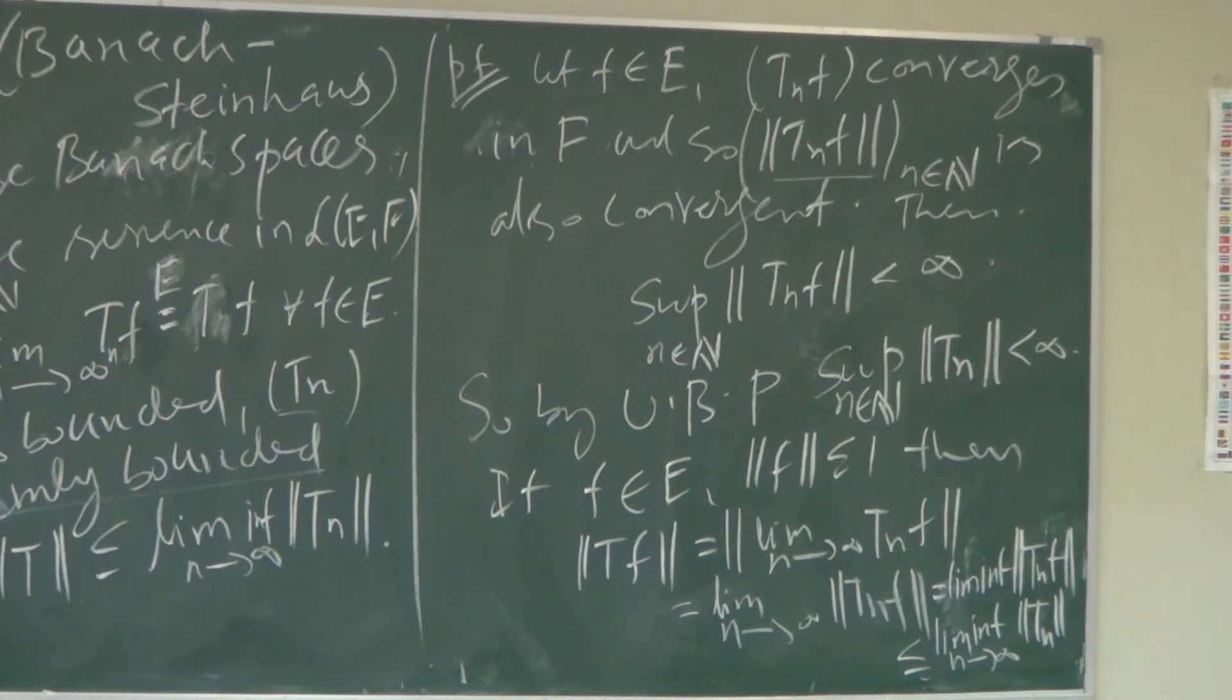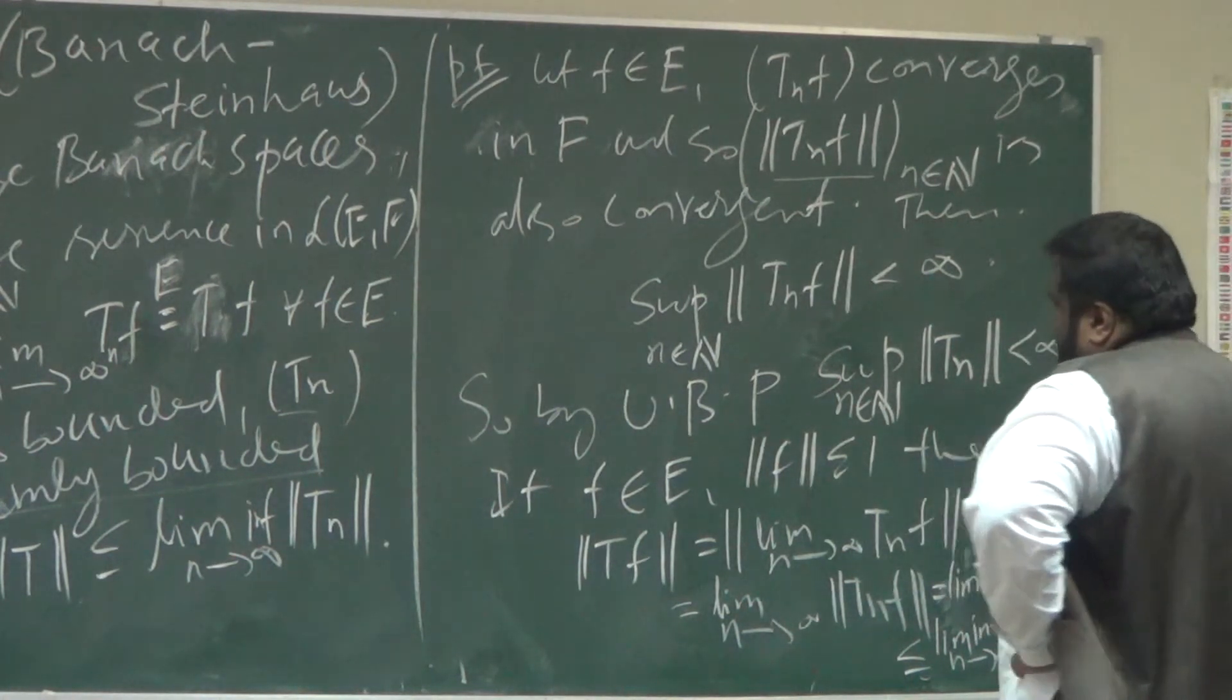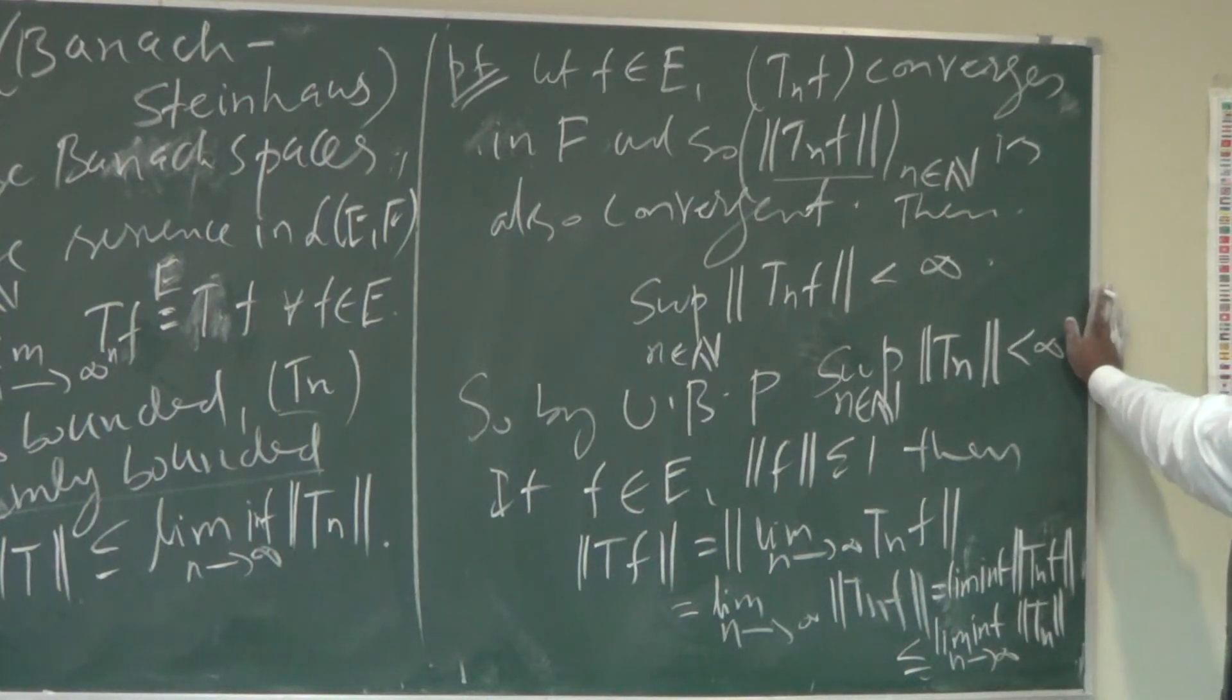So what we showed, that's what I have told you, that when Tn f converges, it will absolutely converge. So we can simply say that, it's not absolute convergence, that absolute convergence is about series. So as we can say that Tn f converges, it is bounded. So in that we can take the supremum. So that's Banach-Steinhaus theorem.